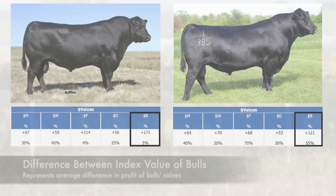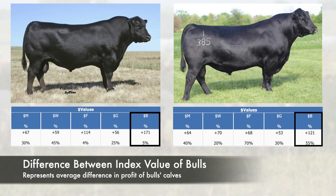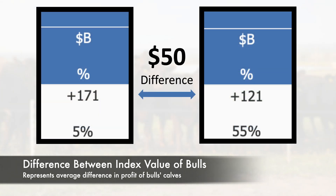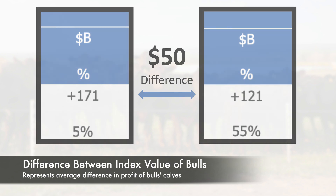The difference in the index values of bulls represents the average difference in profit of each bull's calves. So if Bull A's Dollar B value is $50 higher than Bull B's Dollar B value, his calves are expected, on average, to be $50 more profitable through the feedlot and on the rail.